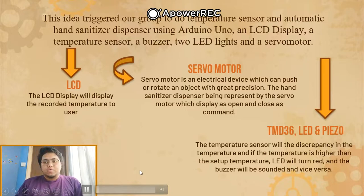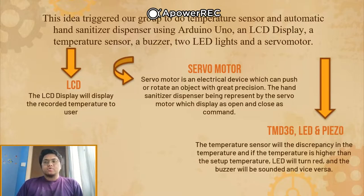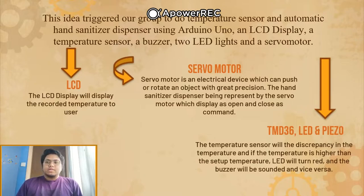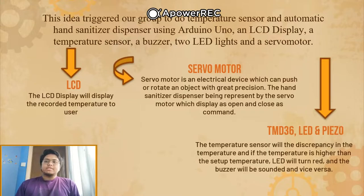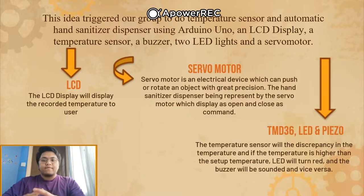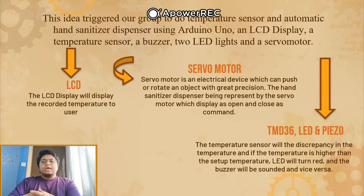This idea triggered our group to design a temperature sensor and automatic hand sanitizer dispenser using Arduino Uno, LCD display, a temperature sensor, a buzzer, two LED lights, and a servo motor. The LCD will display the recorded temperature to the user. The servo motor is an electrical device that can push or rotate an object with great precision, representing the hand sanitizer dispenser — opening and closing on command. The temperature sensor, LED, and buzzer work together: if temperature exceeds the set limit, the LED turns red and the buzzer sounds; otherwise, the reverse occurs.